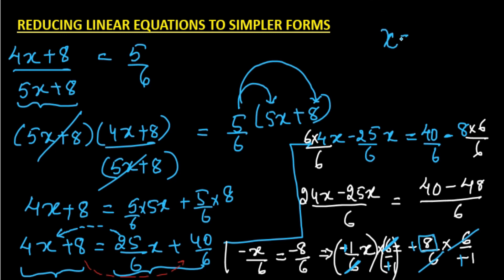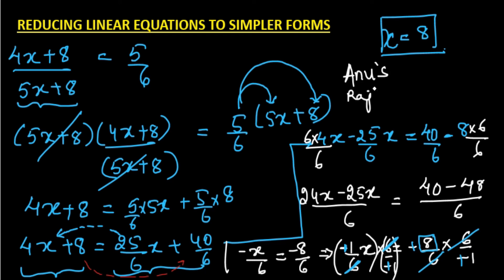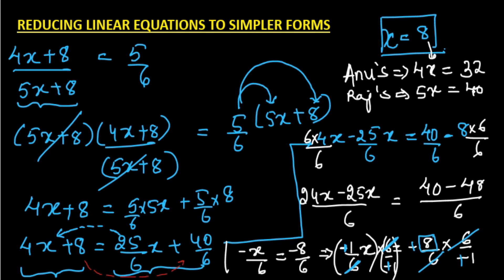We have obtained x = 8. The question asked for Anu's and Raj's present ages. Anu's age was 4x = 4 × 8 = 32, and Raj's age is 5x = 5 × 8 = 40 years old.